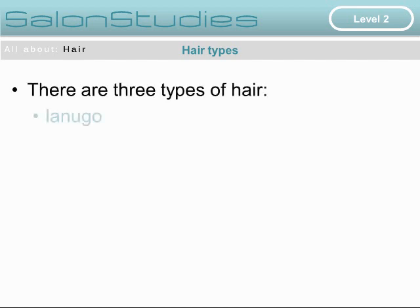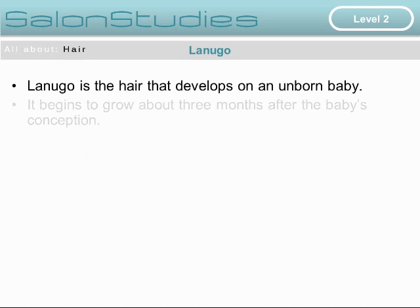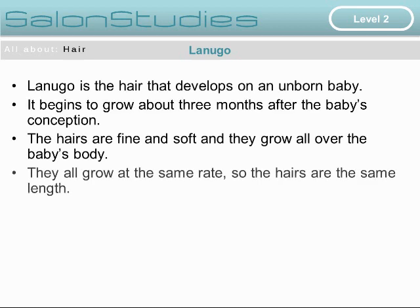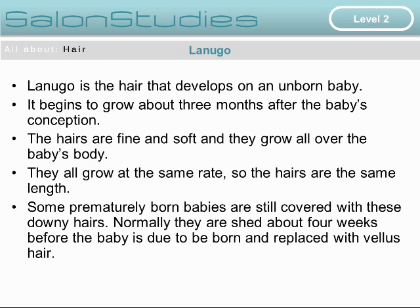There are three types of hair: lanugo, vellus and terminal. Lanugo hair is the hair that develops on an unborn baby. It begins to grow about three months after the baby's conception. The hairs are fine and soft and they grow all over the baby's body, all at the same rate so the hairs are all the same length. Some prematurely born babies are still covered with these downy hairs, but these are normally shed about four weeks after the baby is born, and this is replaced by vellus hair.